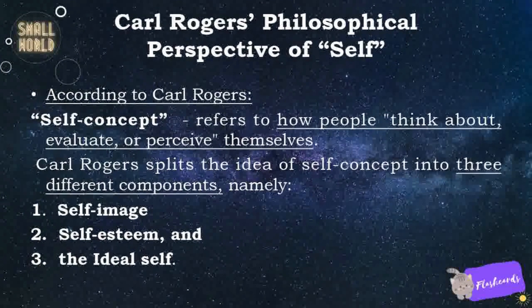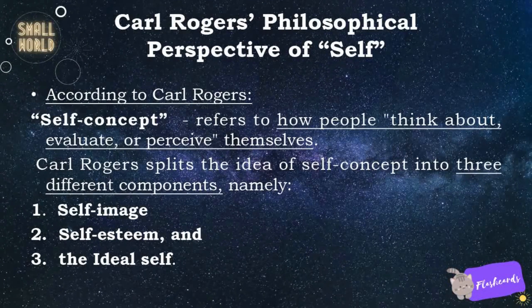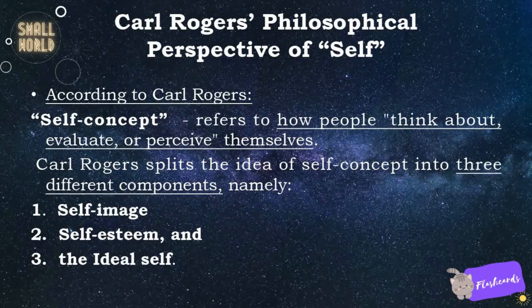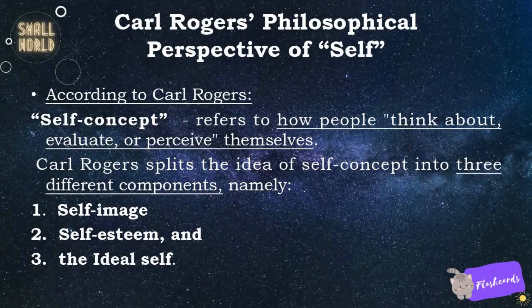Carl Rogers' Philosophical Perspective of Self. According to Carl Rogers, self-concept refers to how people think about, evaluate, or perceive themselves. Carl Rogers splits the idea of self-concept into three different components: 1. Self-image, 2. Self-esteem, and 3. The ideal self.